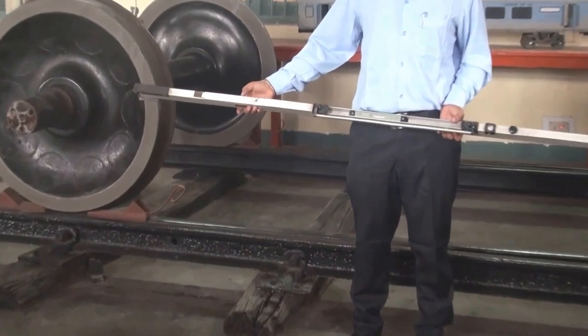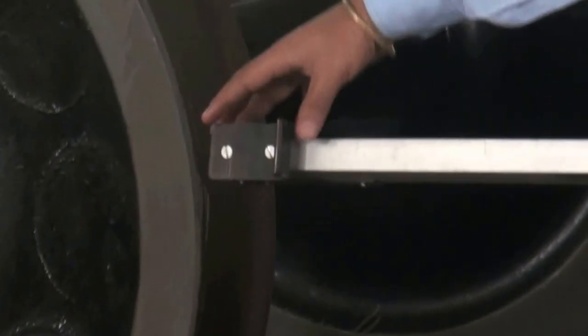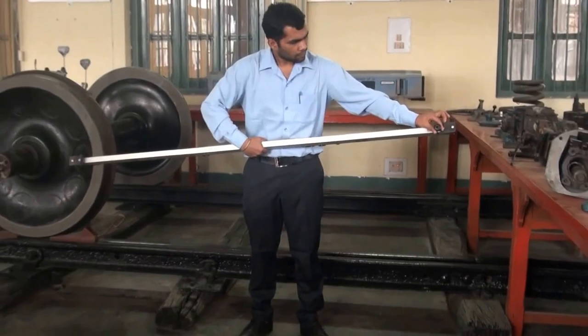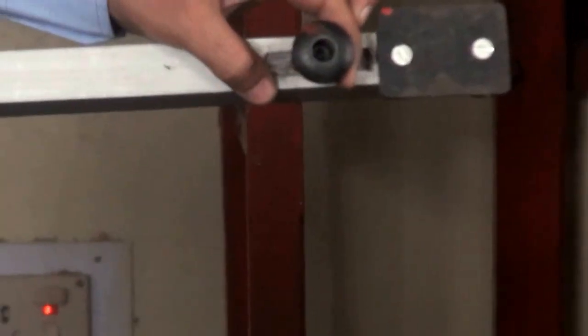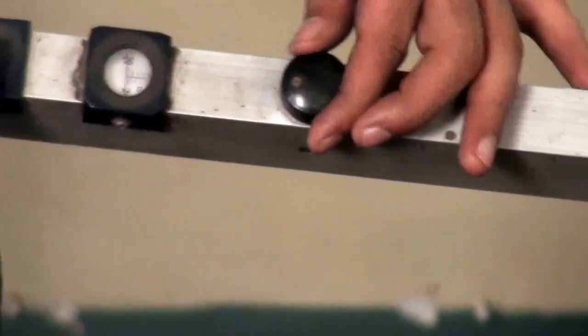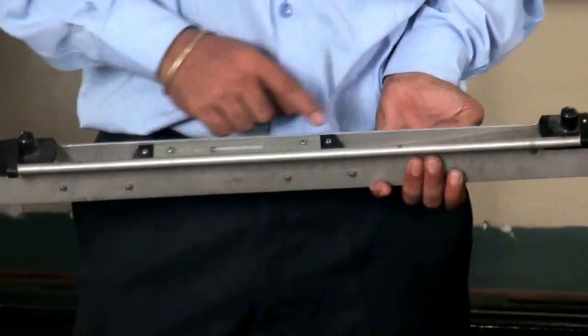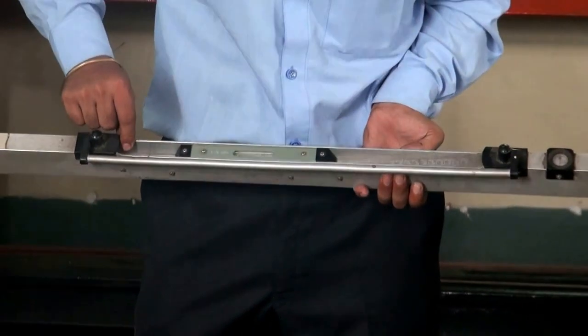This is a track measuring gauge. It has two ends: one fixed end and one movable end, a dial to see the measurement, and a knob to lock the reading. It has a slot for a spirit level and two graduated slopes on each side of the slot.